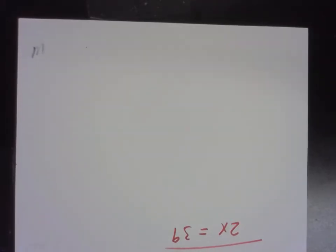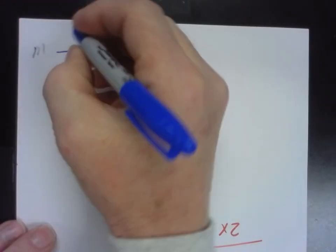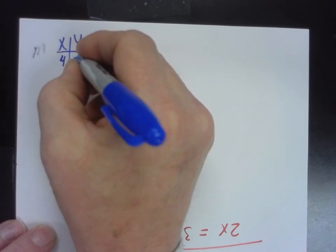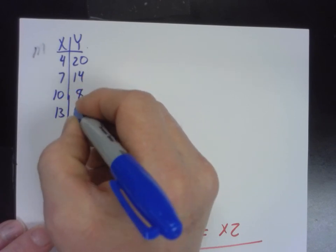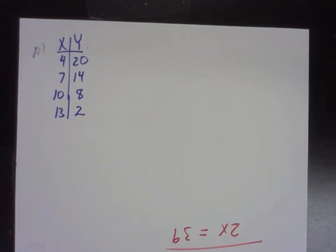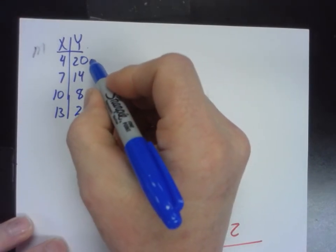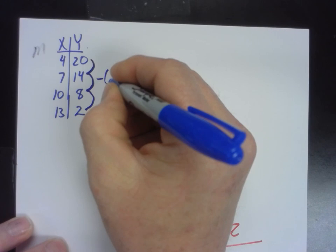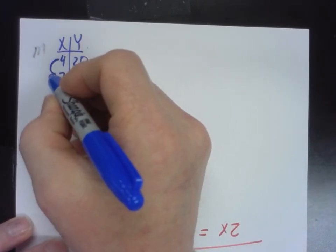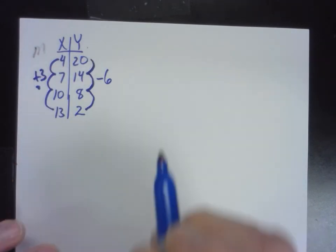Let's look at tables now. Most times, you're not going to see the graph of something. A lot of times, what you see is a table. So if I put a 4 in, I get a 20 out. If I put a 7 in, I get a 14 out. If I put a 10 in, I get a 8 out. If I put a 13 in, I get a 2 out. So, first of all, is that a function? Yes. Is it linear? So, the question is, is there a constant thing going on here? So, I'm going to look here. What's happening each time? Negative 6. And what's happening here each time? Plus 3. So, is that a constant thing that's happening? Yes. So, that's a linear type function.